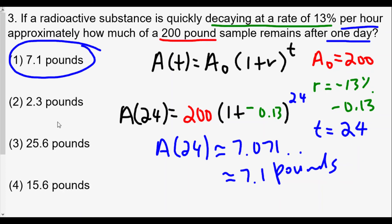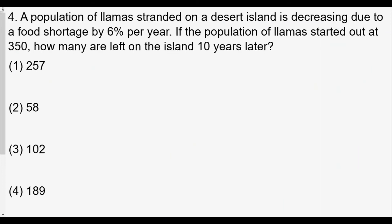Number four: A population of llamas stranded on a desert island is decreasing due to a food shortage by 6% per year. If the population started out at 350, how many are left on the island 10 years later? Again we use our formula A(t) equals A₀ times (1 + r) raised to t power. A₀, our initial value, is 350 llamas.